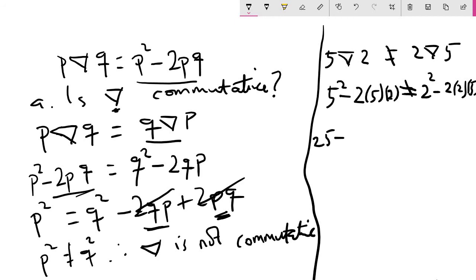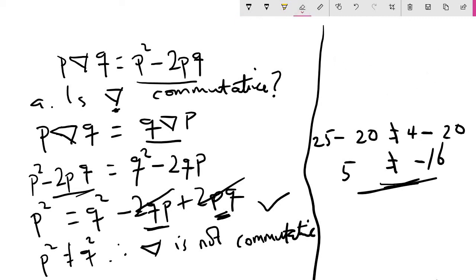5 squared is 25 minus 2 times 5 times 2 is 20, giving us 5. This is not equal to 2 squared which is 4 minus 2 times 2 times 5 which is 20, giving us minus 16. Clearly 5 is not equal to minus 16, which fortifies our proof that Delta is not commutative. By the way, you don't have to show this on the answer paper - this is just for you to check whether your solution was correct. So this solves question A.